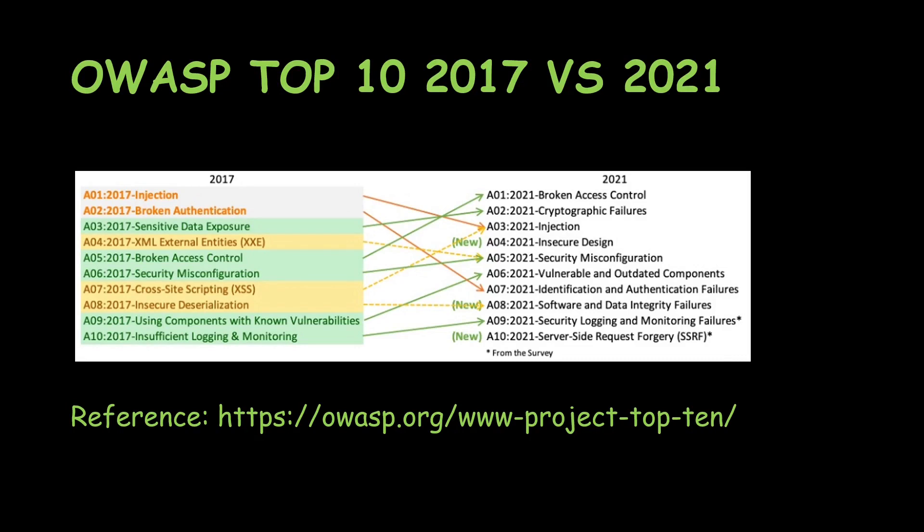Now we'll look at the difference between 2017 and 2021. On the left side you can see the 2017 risks and 2021 on the right side. This is coming from the last official page. We can see that Injection along with Cross-Site Scripting from 2017 is merged into Injection itself, in position 3 for 2021.